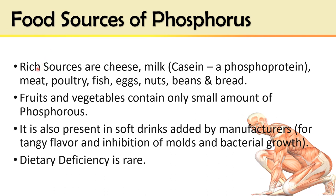Food sources: The rich food sources are cheese, milk, and other dairy products, because milk contains the chief protein casein, which is a conjugated phosphoprotein containing phosphorus. Meat organs including poultry, fish, and eggs are also good sources. It is also present in nuts, beans, and bread, and in soft drinks added by manufacturers for tangy flavor and inhibition of mold and bacterial growth. People consuming more soft drinks may have increased dietary phosphorus intake. Dietary deficiency is rare in Pakistan.